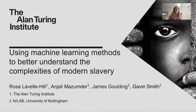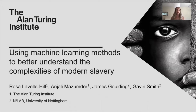Hello, my name is Rosa Lavelle-Hill. This is submission number 88: using machine learning methods to better understand the complexities of modern-day slavery. This is from the Alan Turing Institute with myself and Anjali Mazunda, and also our colleagues from Nottingham, James Golding and Gavin Smith.